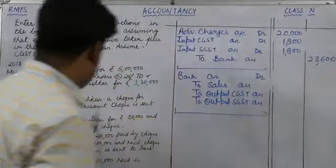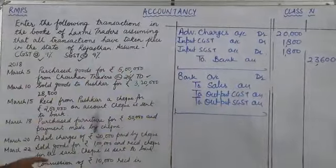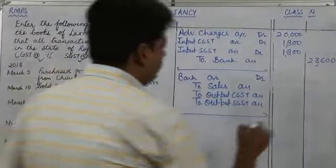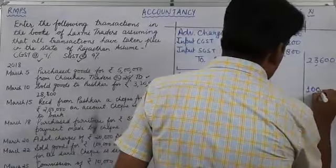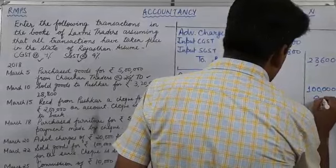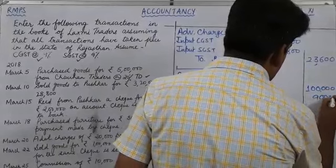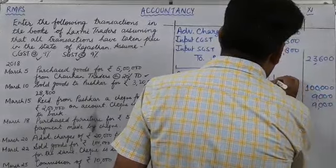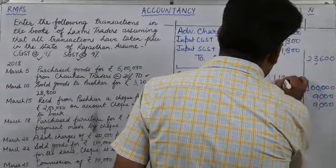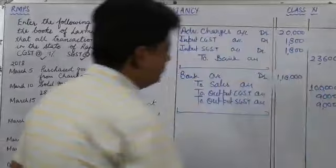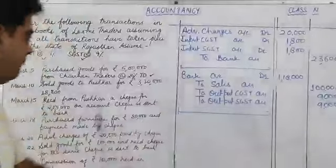Goods sold for cash. You can see selling price is 1 lakh, and we will calculate 9% taxes — that will be 9,000 each. So like this, total amount will be 1,18,000.